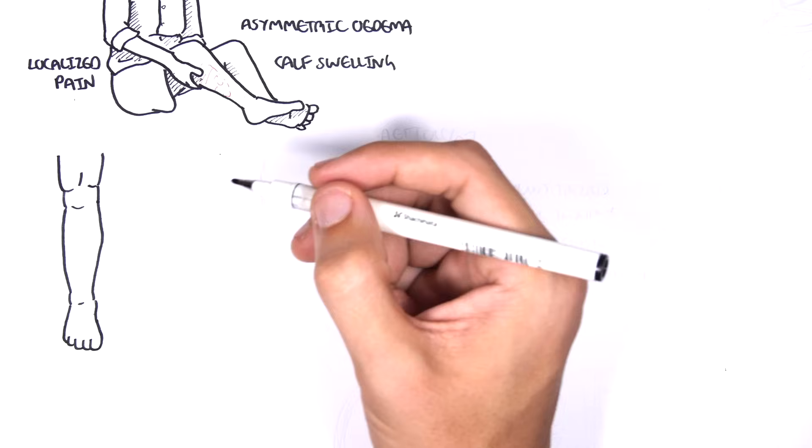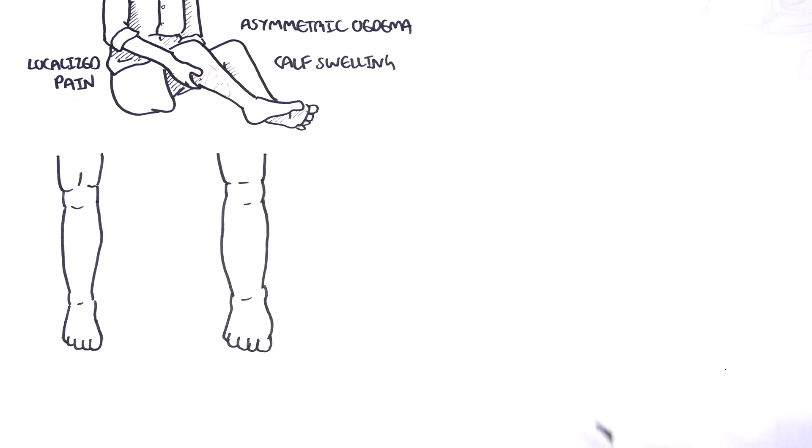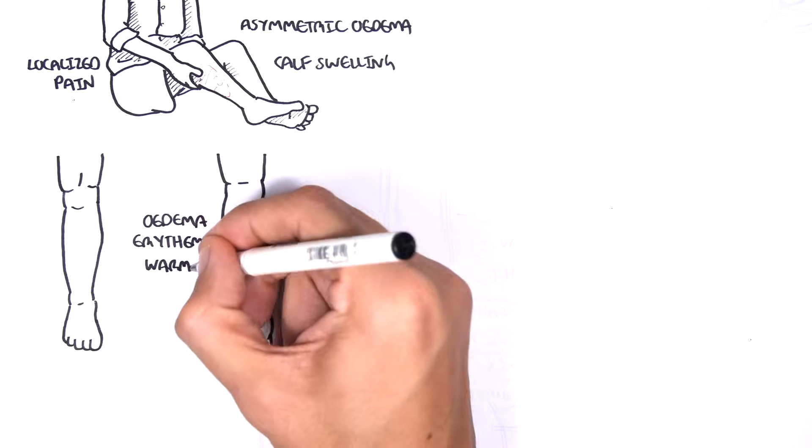Drawing a normal leg, on the left here we have a leg with DVT. The leg with DVT on the left is swollen, has edema with erythema, and is warm.